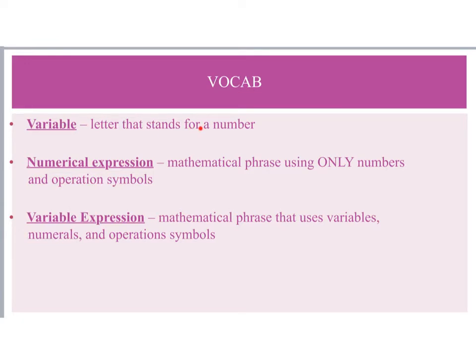To begin with, we need to understand what a variable is. A variable is nothing more than a letter that is supposed to stand for or represent a number. We have numerical expressions, which are mathematical phrases using only numbers and operating symbols — something like three plus five, five times two, or negative six minus seven.